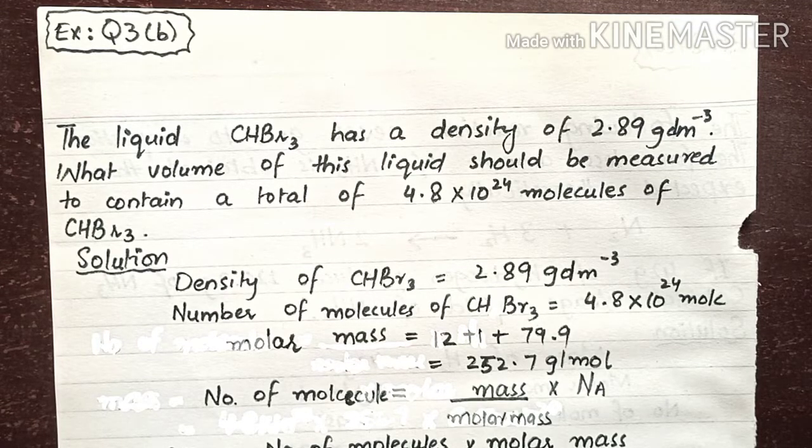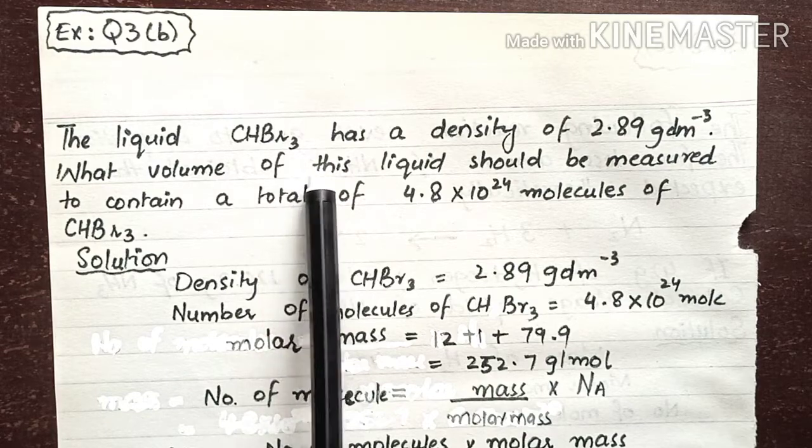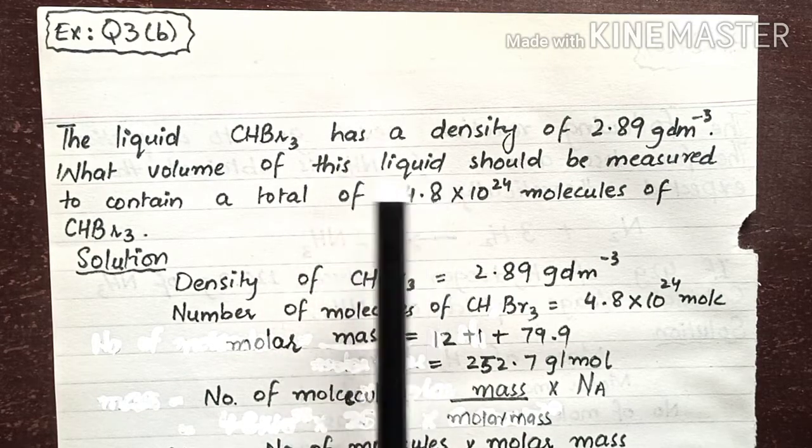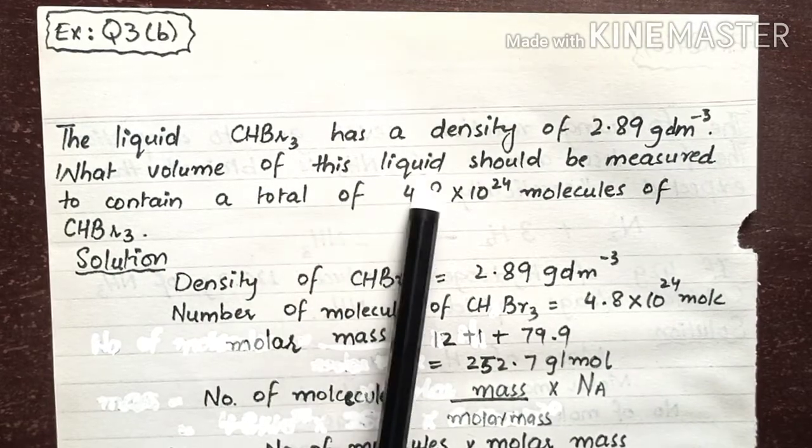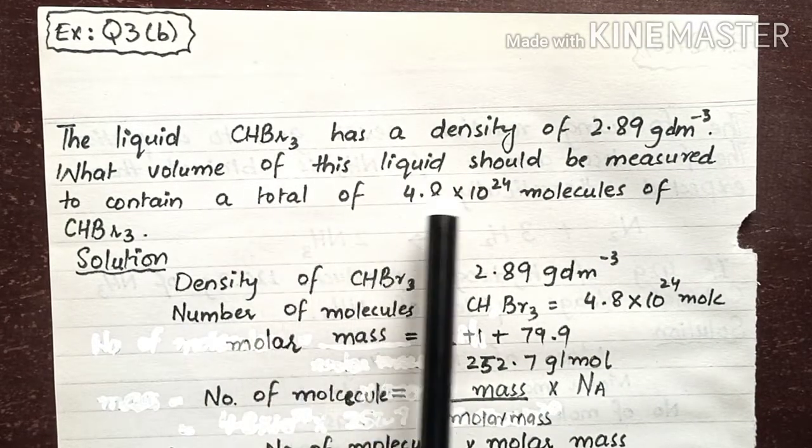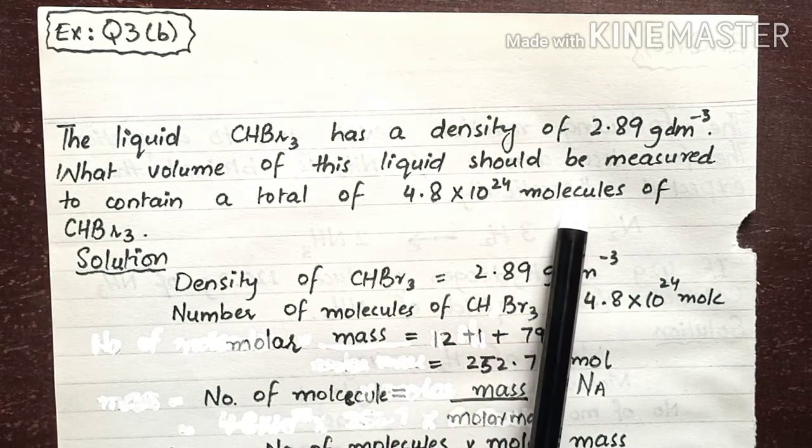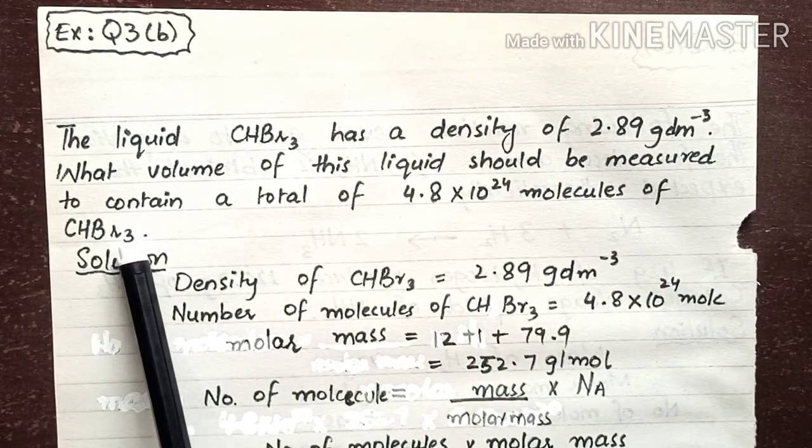Exercise question 3 part B: The liquid CHBr3 has a density of 2.89 grams per dm³. What volume of this liquid should be measured to contain a total of 4.8 × 10²⁴ molecules of CHBr3?